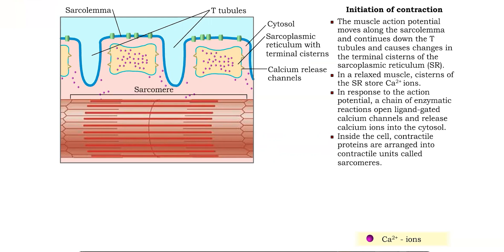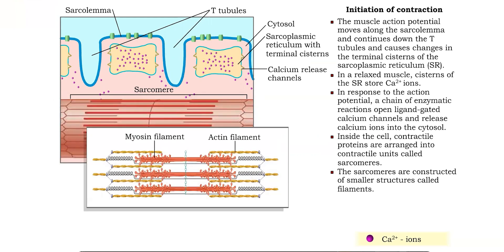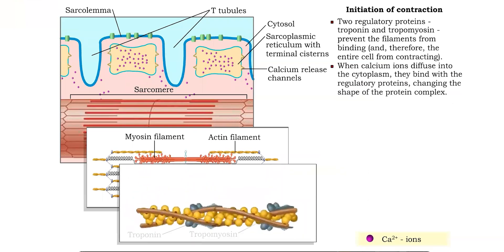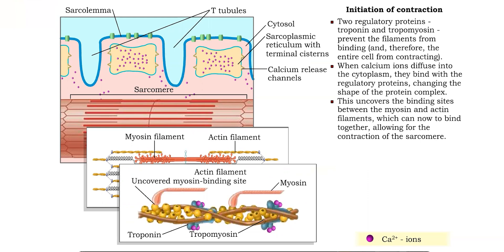In a skeletal muscle cell, the contractile proteins are arranged in a contractile structure called a sarcomere. Each sarcomere consists of two smaller units called filaments, which are prevented from contracting by regulatory proteins. The binding of calcium to the regulatory proteins changes the shape of the protein complex. Binding sites for myosin are now exposed, and the filaments bind together. Contraction of the sarcomere can then occur.